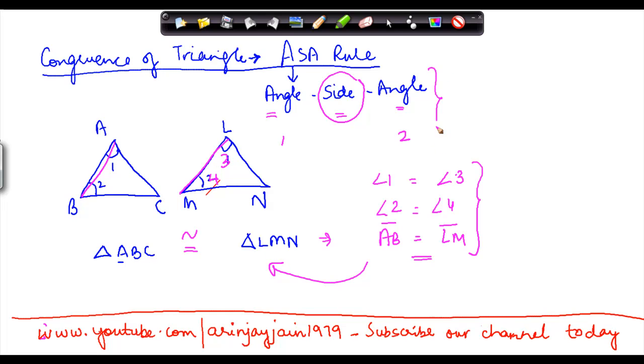What follows is that if these two triangles are congruent, then side BC is going to be equal to side MN. Again, side AC is equal to side LN. And let's say this is angle 5 and this is angle 6.